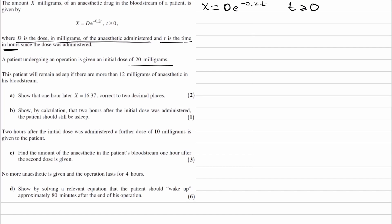We're told the initial dose is 20, so d is equal to 20. The patient remains asleep if there are more than 12 milligrams of anaesthetic in his bloodstream, so x must be bigger than 12 if they are to remain asleep.